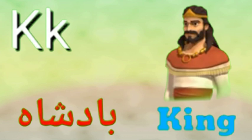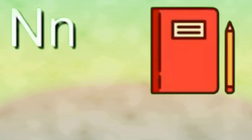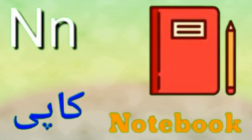K is for King, King means Badshah. L is for Lamp, Lamp means Lamp. M is for Monkey, Monkey means Bandar.